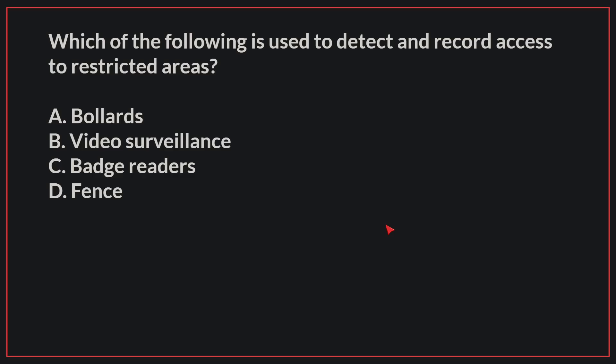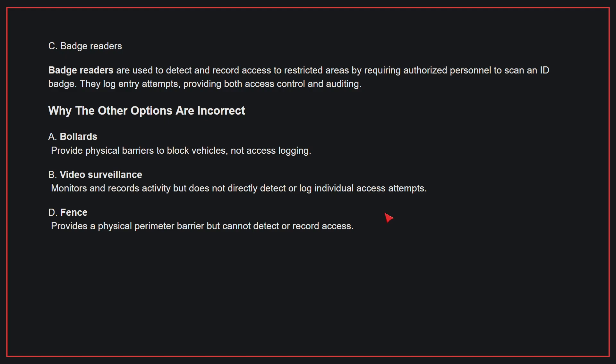Which of the following is used to detect and record access to restricted areas? The correct answer is C, badge readers. Badge readers are used to detect and record access to restricted areas by requiring authorized personnel to scan an ID badge. They log entry attempts, providing both access control and auditing. Why the other options are incorrect: A, bollards — these provide physical barriers to block vehicles, not access logging.